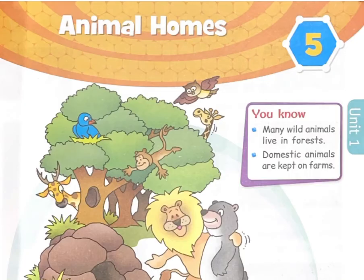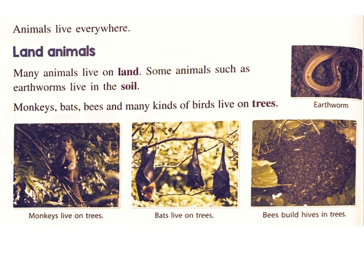Chapter 5: Animal Homes. Many wild animals live in forests. Domestic animals are kept on farms. You will learn about the homes of animals. Animals live everywhere. Many animals live on land.